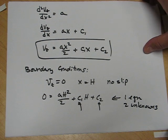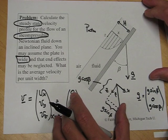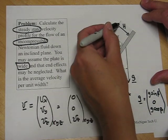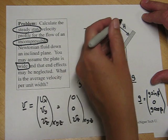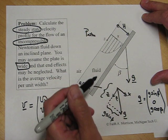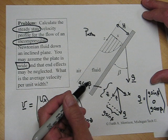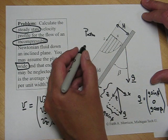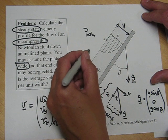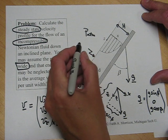Now the second boundary condition, again this takes a little bit of practice, is at the second boundary, which is at the top surface of the fluid. And at the top surface of the fluid, the velocity comes to a maximum. We know it comes to a maximum because at this top surface, it has contact with air.